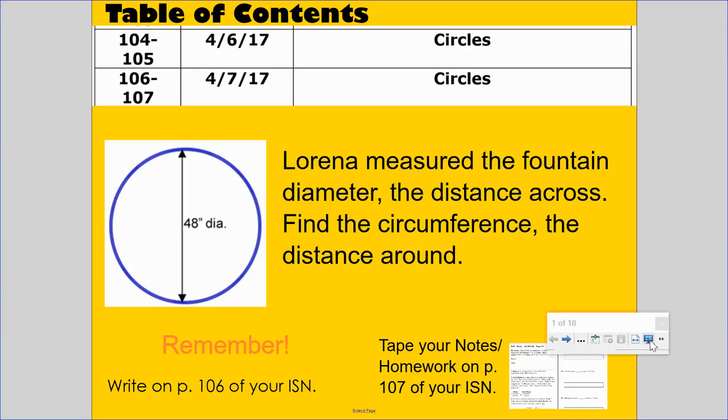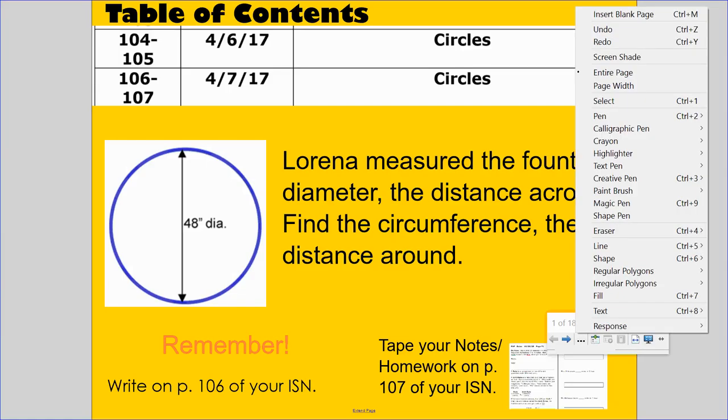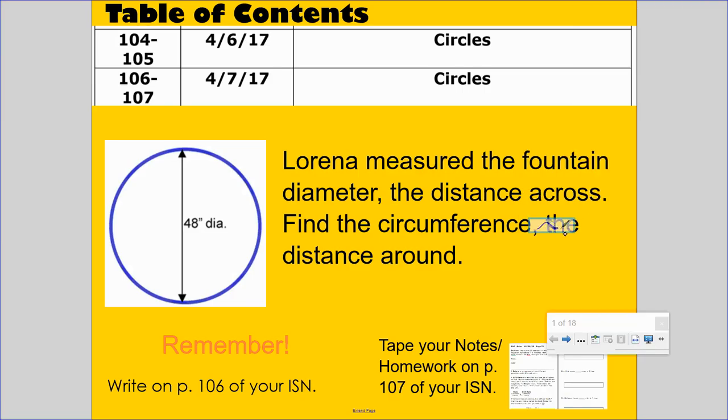We learned yesterday that it takes about 3.14 diameters to wrap around the edge of a circle, or the perimeter of the circle, or the distance around the circle. So if the diameter is 48, let me get my pen.